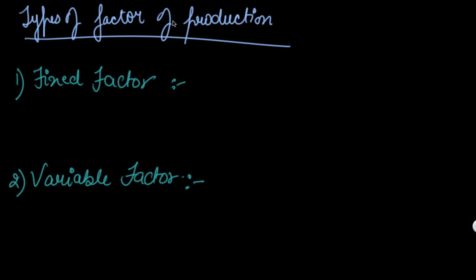Now, understand the types of factors of production. There are two types: number one is your fixed factor of production, and number two is your variable factor of production.